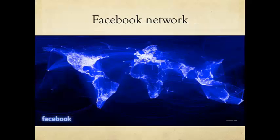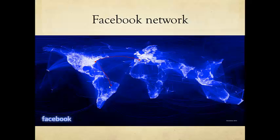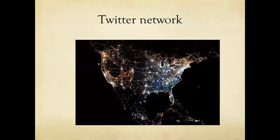This course is about these networks. It's about the Facebook network, where a node is a Facebook user and the link could be a bi-directional relationship of friendship, or maybe a uni-directional relationship of subscriber — Alice subscribed to Bob, but not the other way around. It's about Twitter networks, where a blue dot is a Twitter user account, and a link between two users could be a follower relationship.